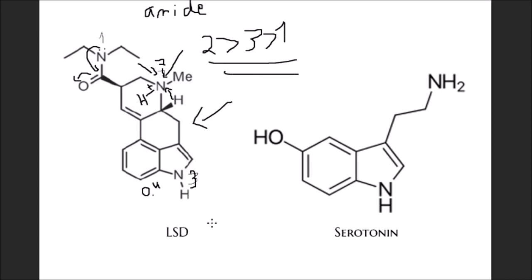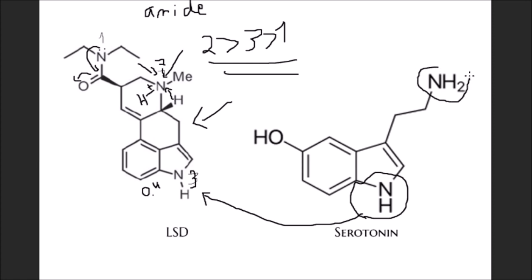Now let's look at serotonin — it's much easier after analyzing LSD. This nitrogen is a pyrrolic nitrogen, so it's not basic as we discussed. This other one is a normal amine. Normal amines are more basic than amines whose lone pair is included in aromaticity. So if this is number one and this is number two, one is more basic than two.